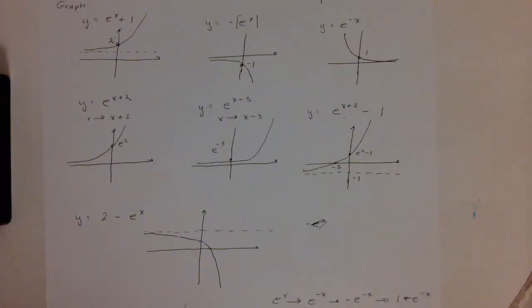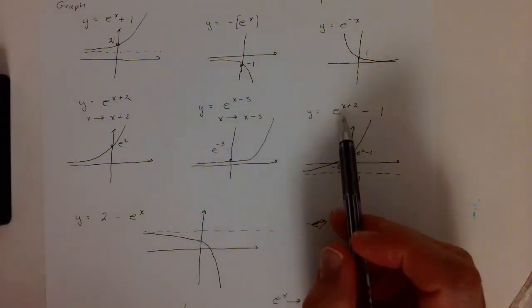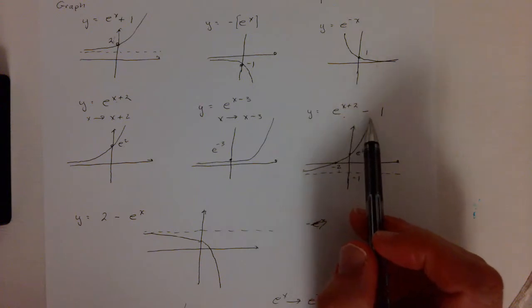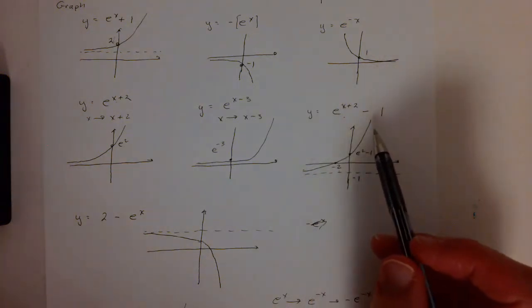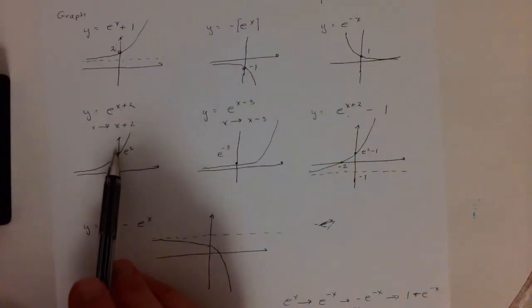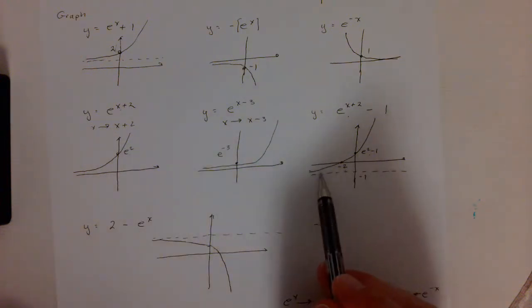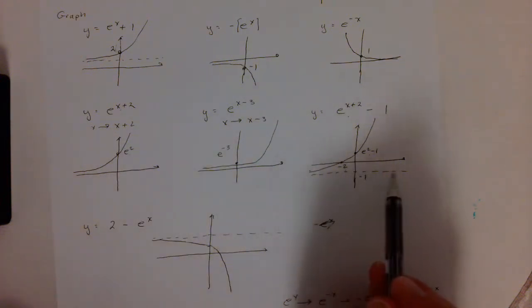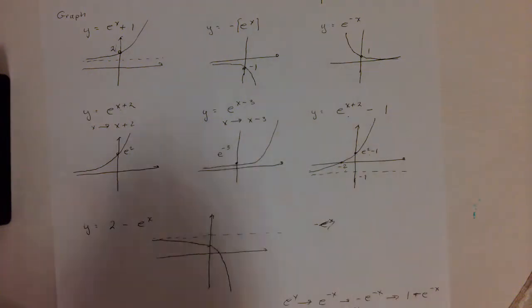Okay, so we've had a chance to work on some of these other ones. This first one, how you work on e to the x plus 2 minus 1, we've basically taken this graph right here and we subtract 1 from it, so we're shifting it down. So that's why the horizontal asymptote is now at negative 1.